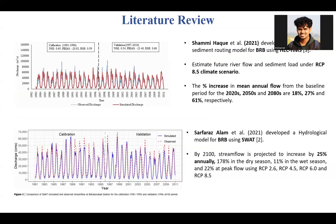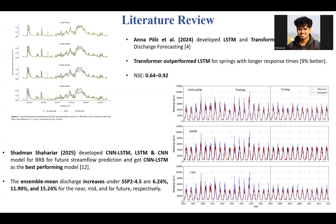In the literature review, Hock et al. developed the HEC-HMS model for the Brahmaputra River Basin and projected a 61% increase in mean annual flow by the 2080s period, while Alom et al. developed a SWAT model for this basin and found a similar increase in discharge by the year 2100. On the deep learning side, Pulse et al. developed an LSTM-transformer model for streamflow forecasting and found the transformer model is a better performer than LSTM due to its longer memory. Shahadi R. developed three deep learning models — CNN, LSTM, and CNN-LSTM — and found CNN-LSTM performs best.